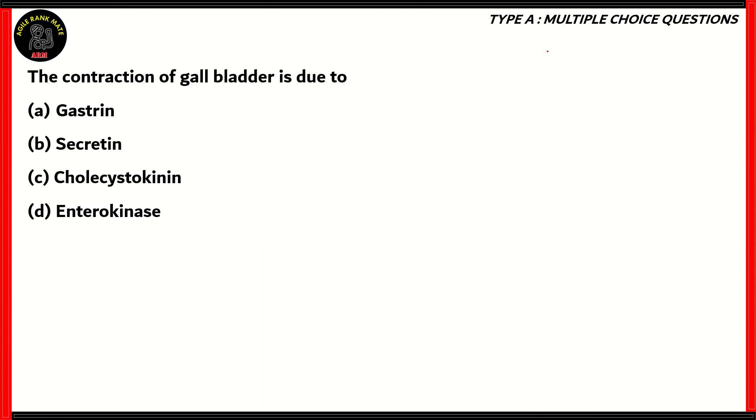Now let's look at the final question of this episode. The contraction of gallbladder is due to the hormone gastrin, secretin, cholecystokinin, or enterokinase. Which of these is the correct option? Let's look at gastrin. The term gastrin implies that it has something to do with the gastric juice, and that is correct. It stimulates the secretion of gastric juice and is also responsible for the churning movement in the stomach. So option A is incorrect.